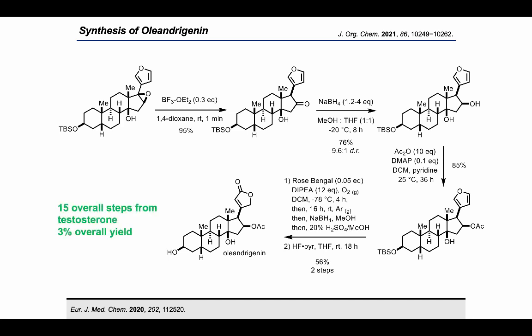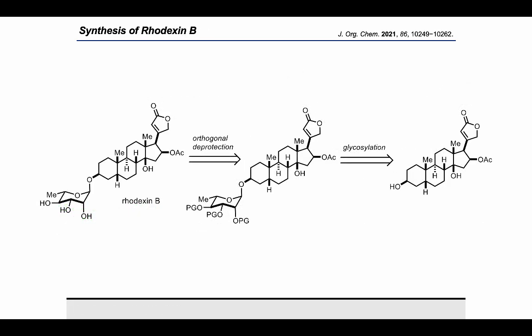With this concise approach to oleandrogenin in hand, our subsequent studies focused on developing a strategy for the C3 glycosylation leading to Rodexin B, which contains an alpha-L-rhamnose moiety at the C3 position. While chemical glycosylation of cardiotonic steroids has been previously accomplished in various contexts, including our own studies at the time of publication, to the best of our knowledge, the glycosylation of oleandrogenin had not been previously investigated.